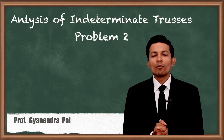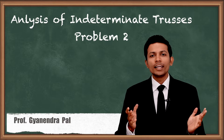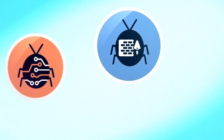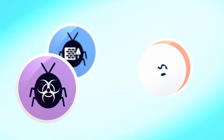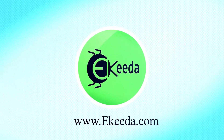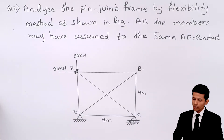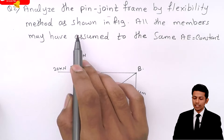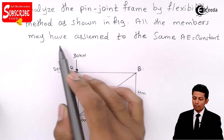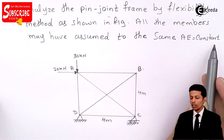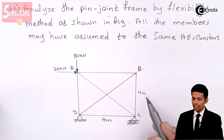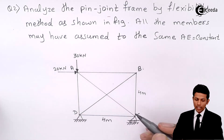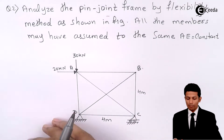Hello friends, let's start another problem on the trusses. This is problem number two on trusses. The question given to us is: analyze the pin-jointed frame by the flexibility method as shown in the figure. All members have the same cross-section, A is equal to constant. The frame dimensions are 4 meters by 4 meters with joints A, B, C, and D.